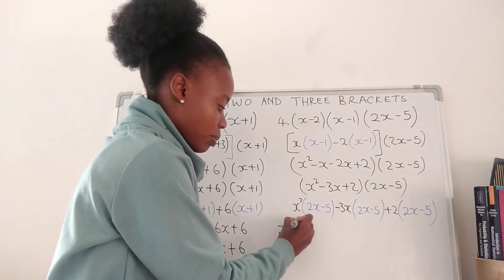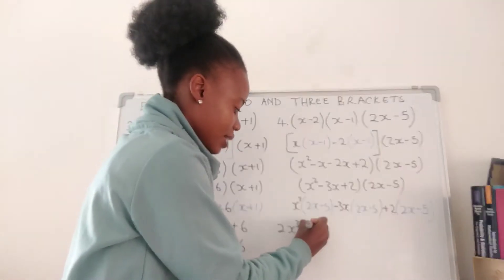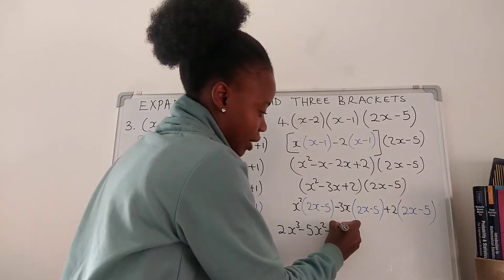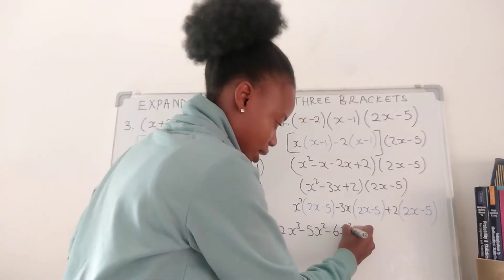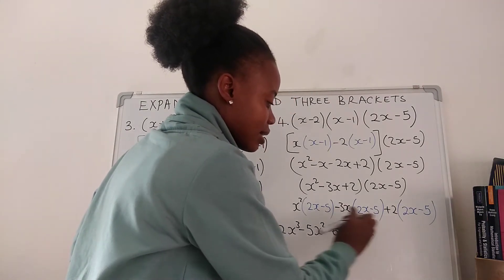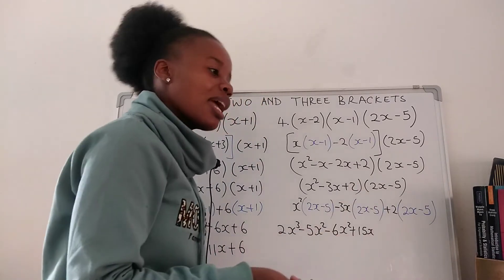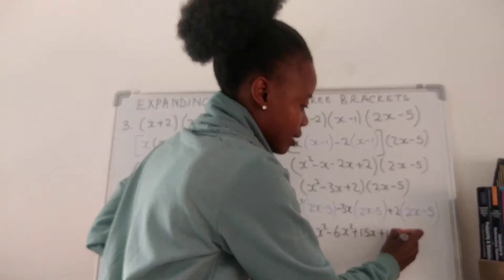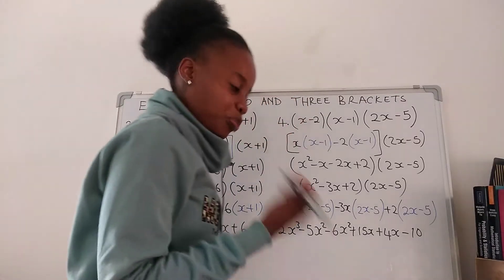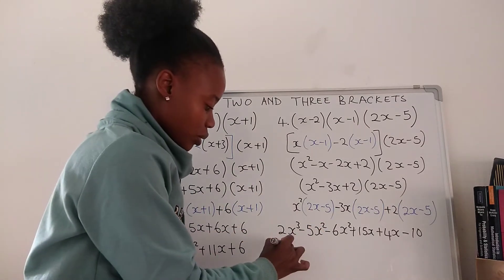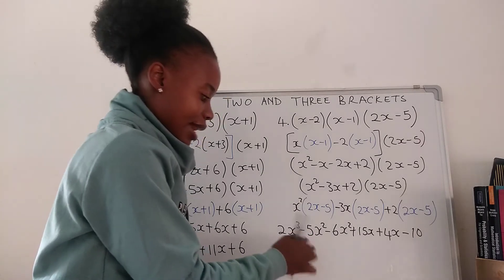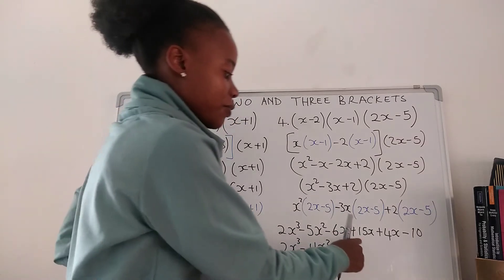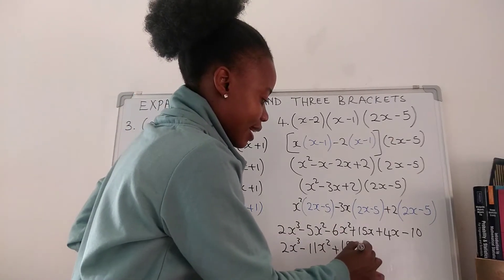x squared times 2x is 2x to the power 3, x squared times negative 5 is negative 5x squared. Negative 3x times 2x is negative 6x squared, negative 3x times negative 5 is positive 15x. 2 times 2x is 4x, 2 times negative 5 is negative 10. We collect like terms: 2x to the power 3, negative 5x squared minus 6x squared is negative 11x squared, 15x plus 4x is 19x.